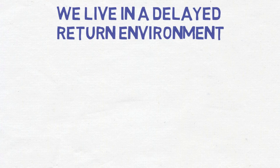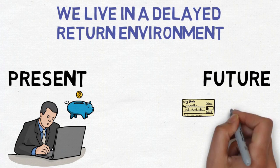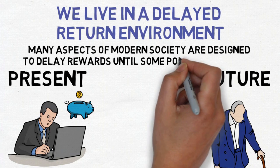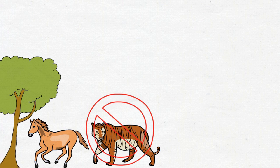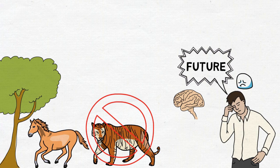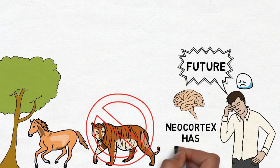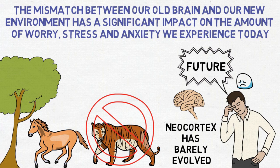We humans live in what researchers call a delayed return environment. Most of the choices you make today will not benefit you immediately. If you do a good job at work today, you'll get a paycheck in a few weeks. If you save money now, you'll have enough for retirement later. Many aspects of modern society are designed to delay rewards until some point in the future. While other animals are worried about immediate problems like avoiding predators or seeking shelter from a storm, humans also worry about potential problems ahead. Unfortunately, living in a delayed return environment often leads to chronic stress and anxiety for humans, because the newest part of our brain, and the part most commonly associated with higher reasoning, the neocortex, has barely evolved since our Paleolithic ancestors around 200,000 years ago, unlike our societal evolution, which is only accelerating. Hence the mismatch between our old brain and our new environment has a significant impact on the amount of worry, stress, and anxiety we experience today.